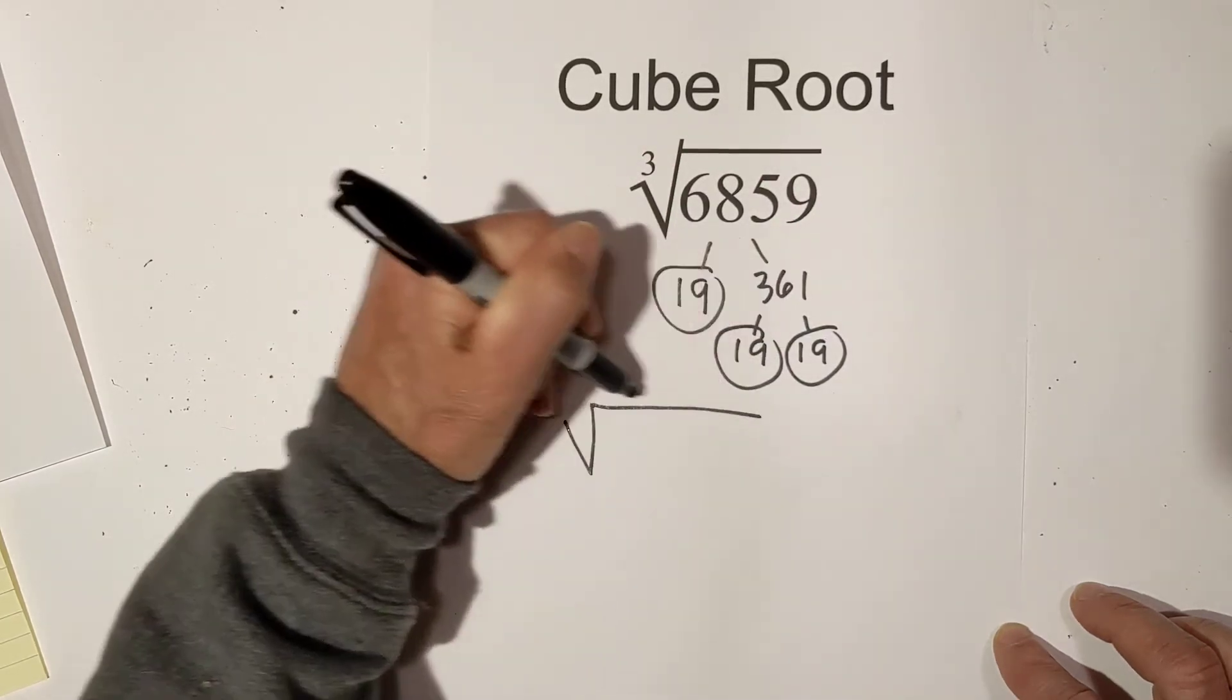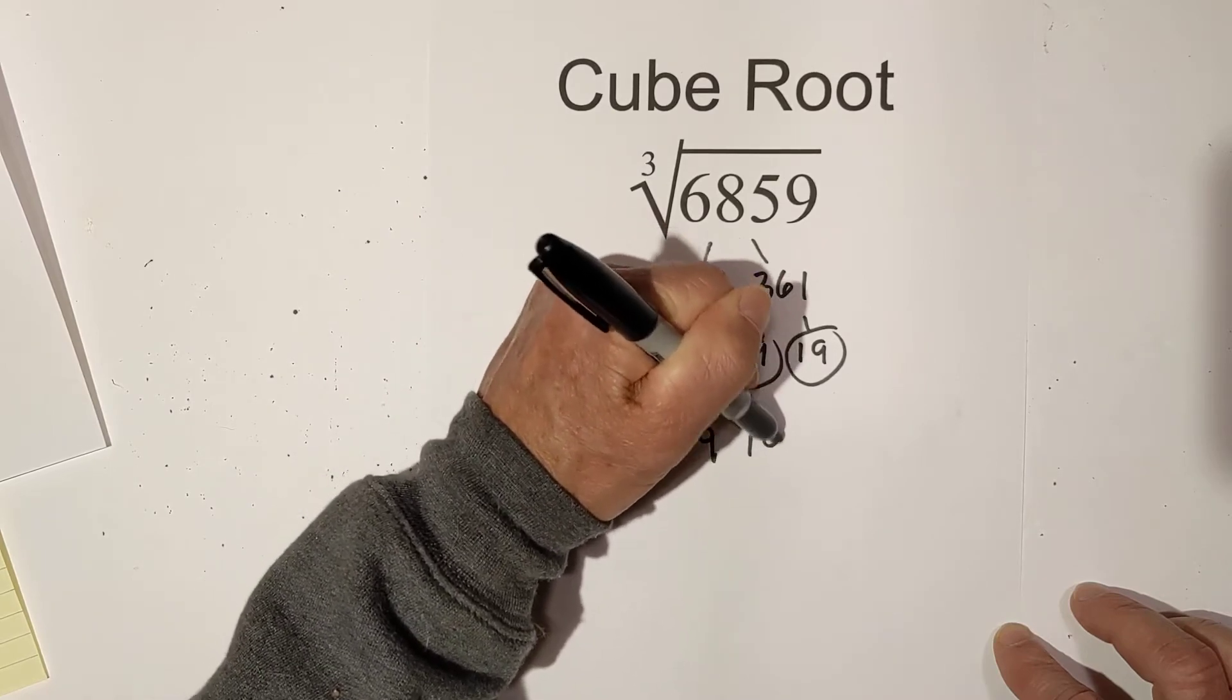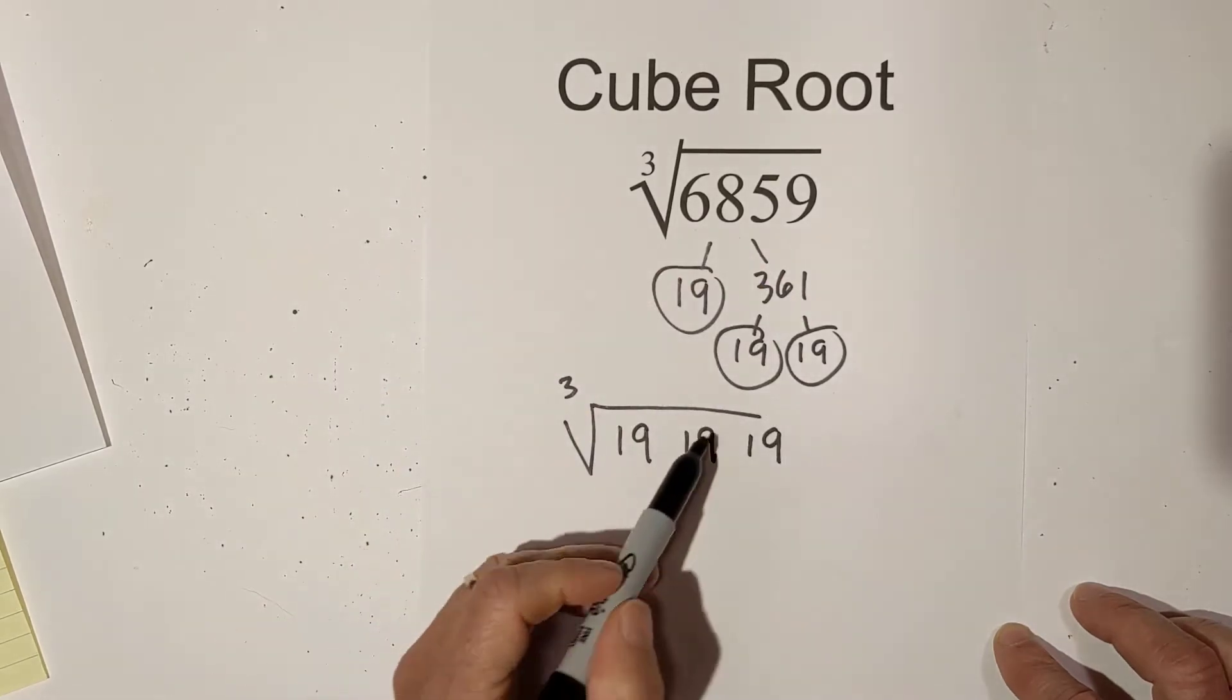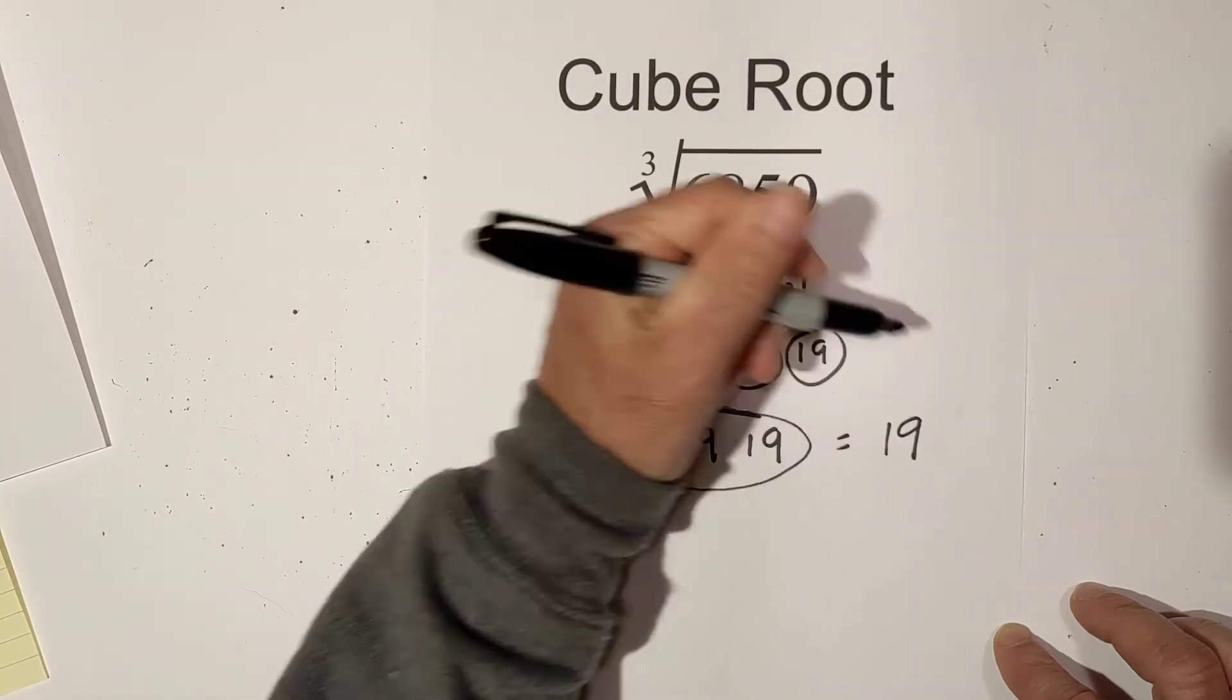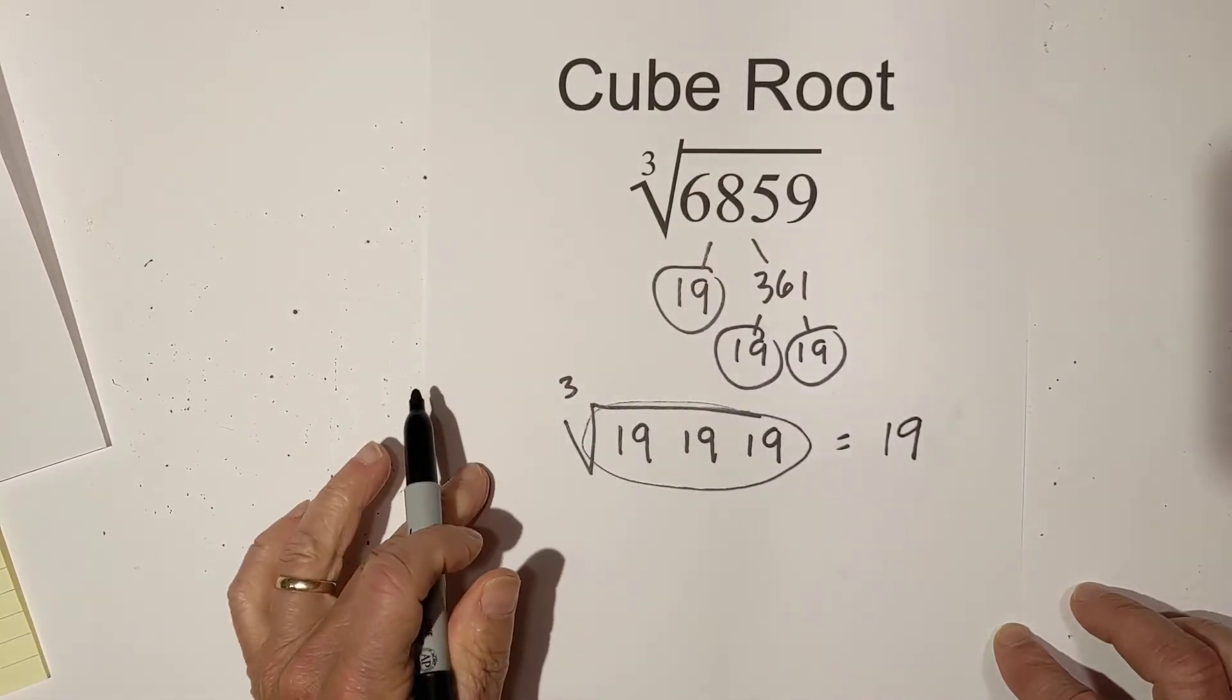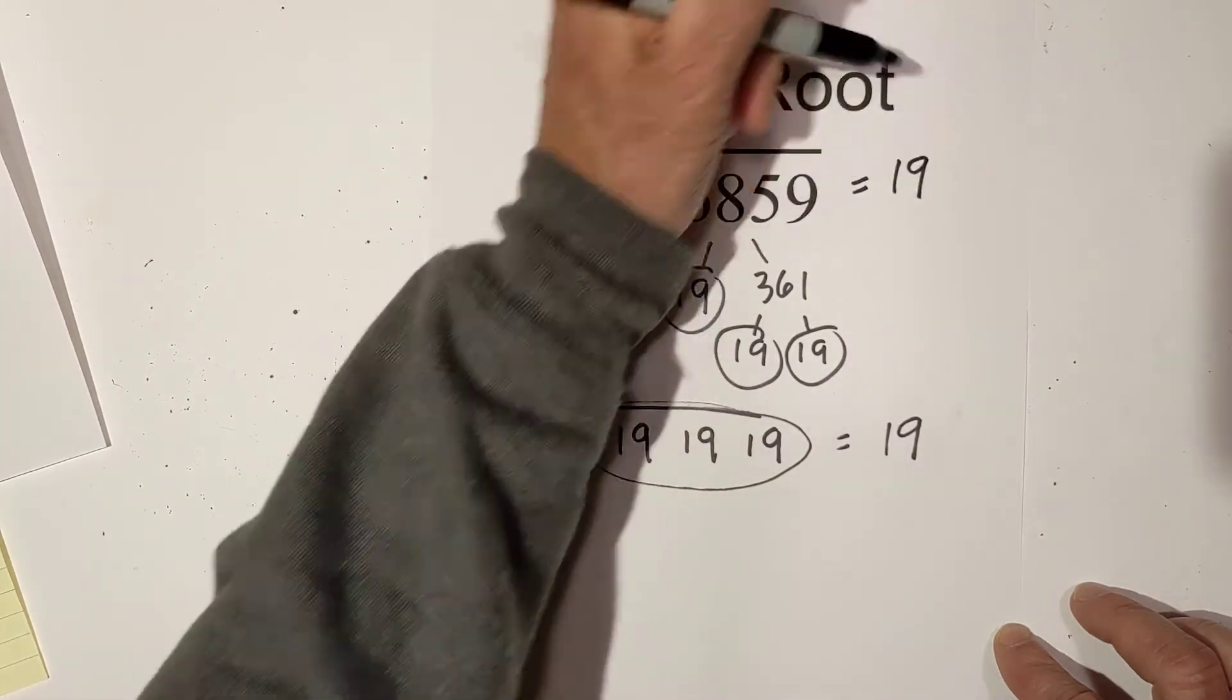We can place them now back under the cube root sign, and if you have groups of three you may pull out a group of three. In this case we have no more numbers underneath, so the cube root of 6,859 is indeed 19.